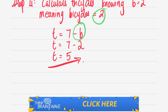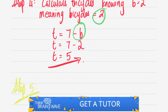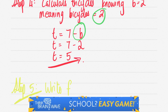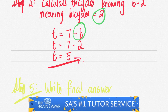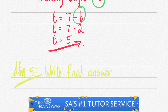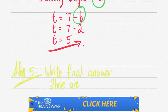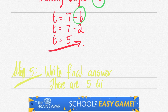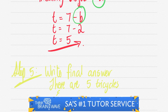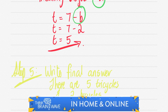Step five: write down the final answer. There are 5 tricycles and 2 bicycles. Easy game.